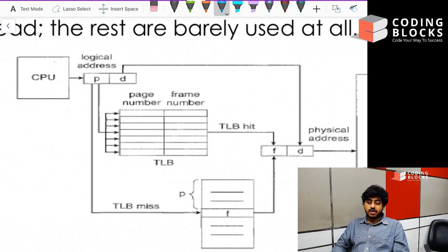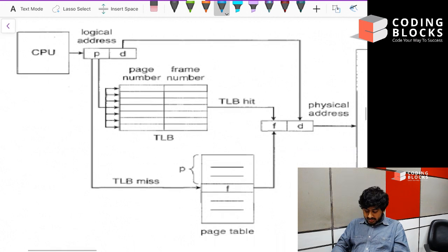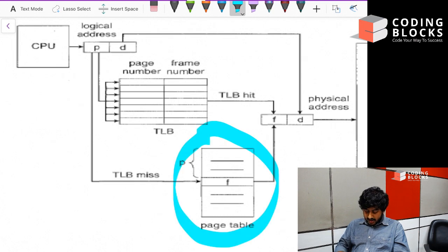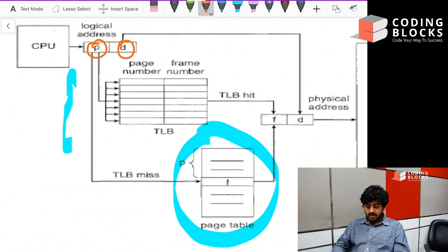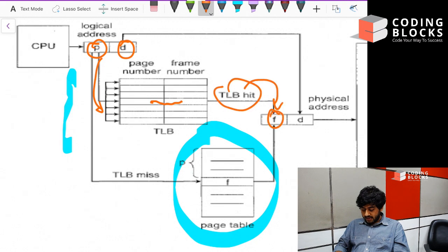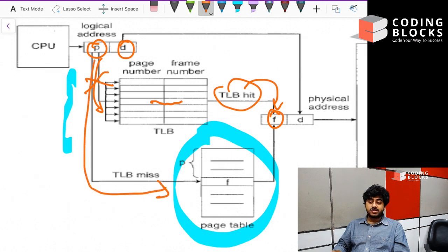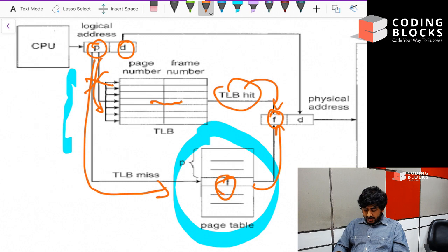The page table and TLB work together as follows: when we provide a page number P and offset D, we first check if P is in the TLB. If we find a match in the TLB, we retrieve the frame number F directly from there. If there is no match, we go to the original full page table to find the value of F. Additionally, whenever we find an F from the page table, we put it back into the TLB for future use.